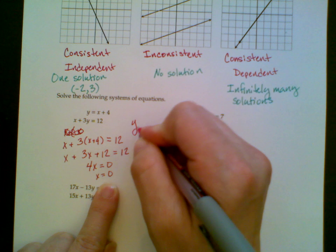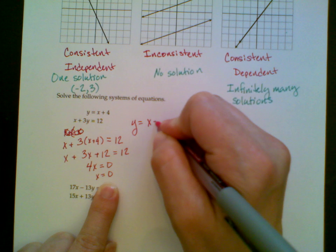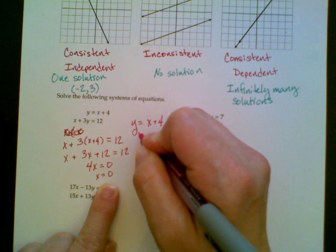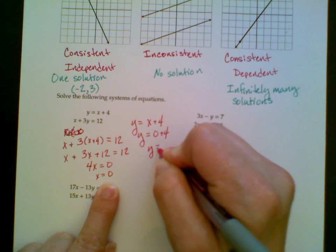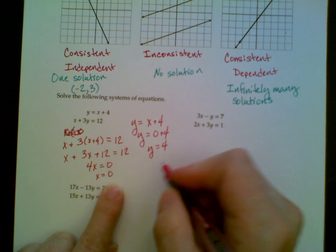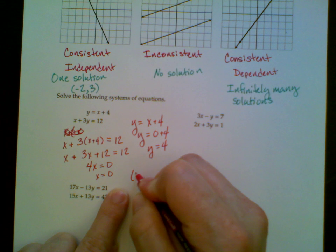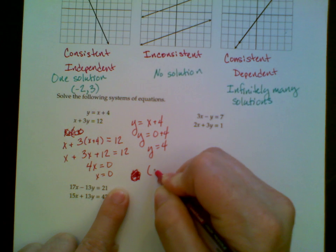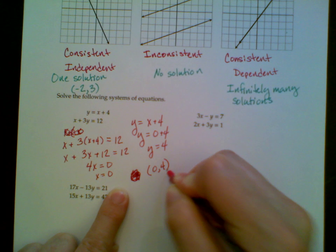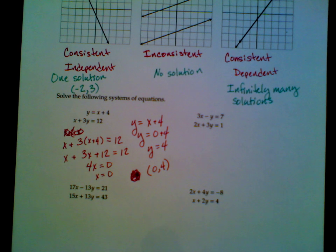So y equals, it's y is x plus 4, I'm just rewriting it there. So y is 0 plus 4, which means y is 4. My solution to the system, then, is the point 0 comma 4.